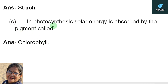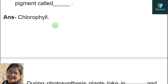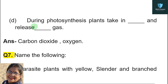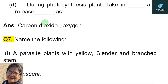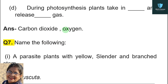Continuing fill in the blanks: in photosynthesis, solar energy is absorbed by the pigment called __. Answer: chlorophyll. During photosynthesis, plants take in __ and release __ gas. Answer: carbon dioxide is taken in and oxygen is released.